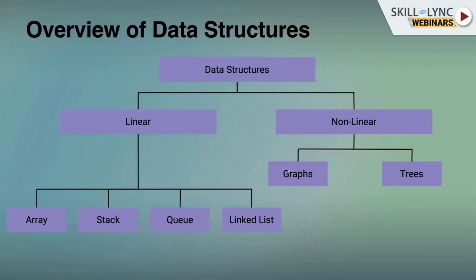For nonlinear data structures, we have graphs and trees. Graphs can be connected or non-connected, closed or open. A tree is always open with multiple branches — it has a single root, multiple branches, and leaves at the end. These data structures can all be found in C++'s Standard Template Library.